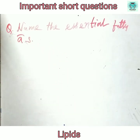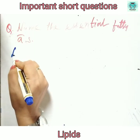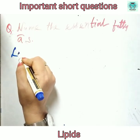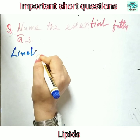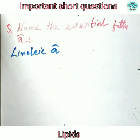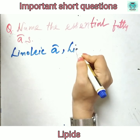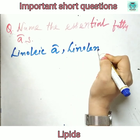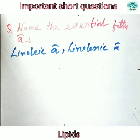Moving to the next important lipid: what are essential fatty acids? Essential fatty acids are those which we have to take through food. The examples are linoleic acid, linolenic acid, and arachidonic acid.